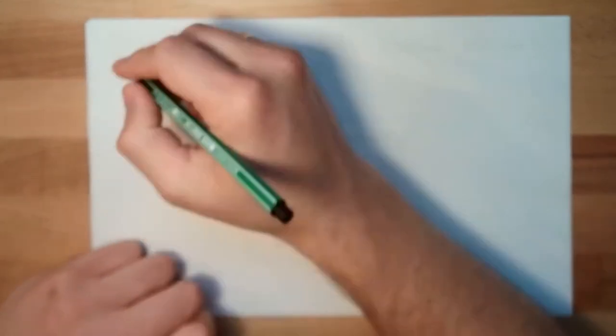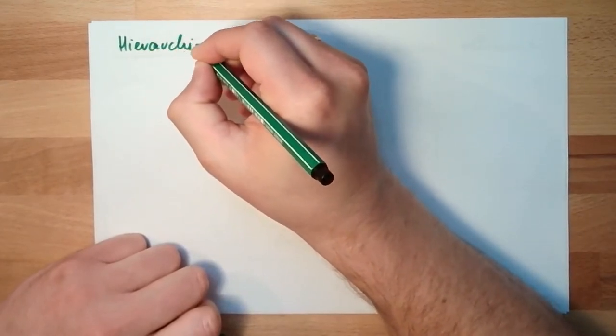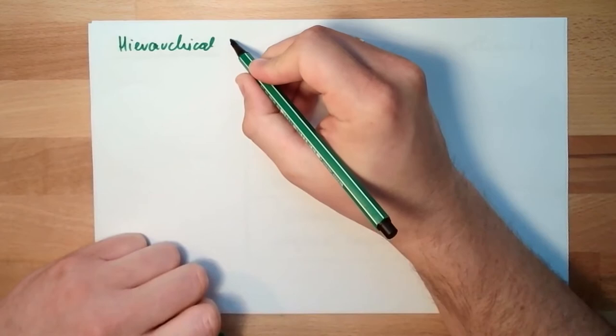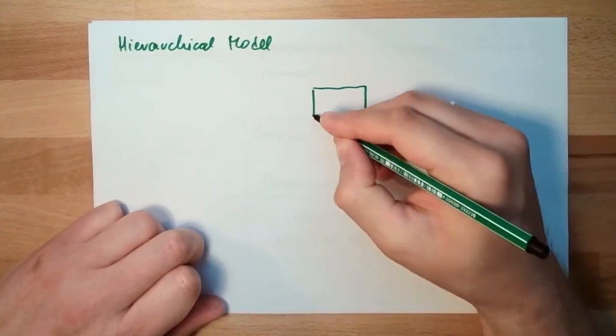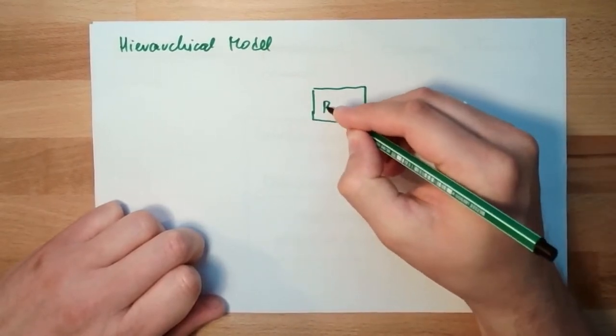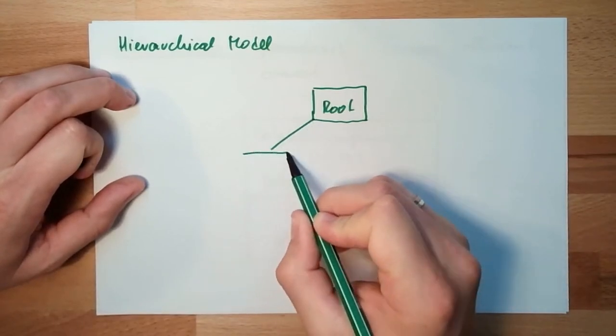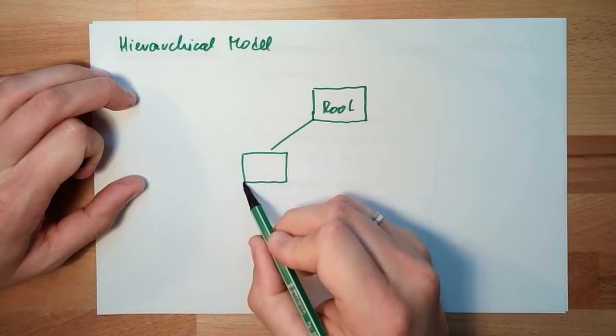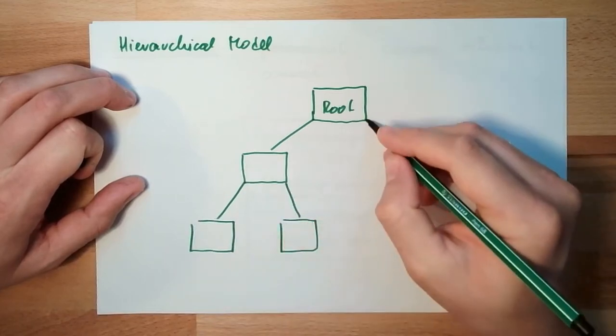The first one was the hierarchical database model. How is this working? There was one root, one element, which was called root. Under each element, there might be one or even more other elements.